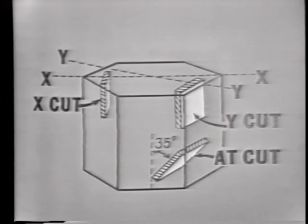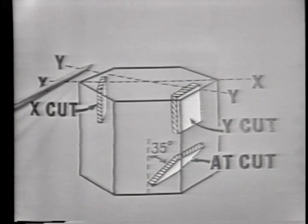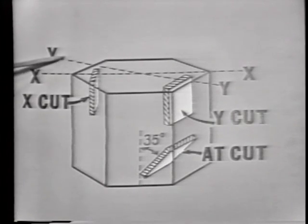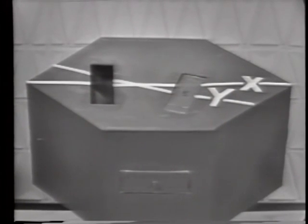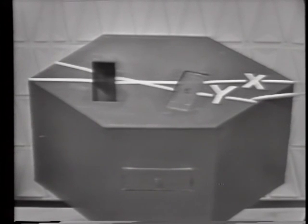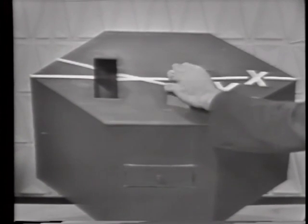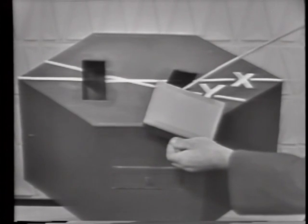For the second cut, we will use the Y-axis, which passed through the face of the crystal. This cut will be taken perpendicular to the Y-axis, and it also is parallel to the Z-axis, which ran through the center of the crystal. The Y-axis passed through the face of the crystal; we'll cut perpendicular to that and parallel to the Z-axis. Since we took it in reference to the Y-axis, it would be known as a Y-cut crystal.